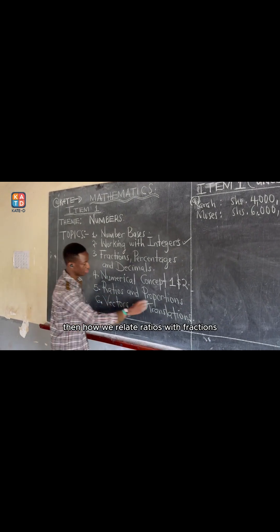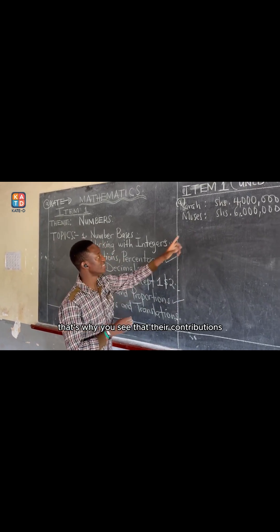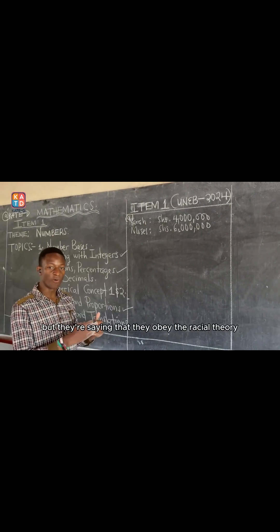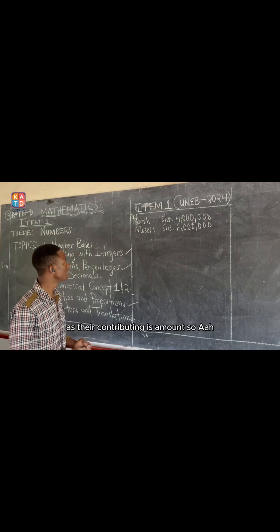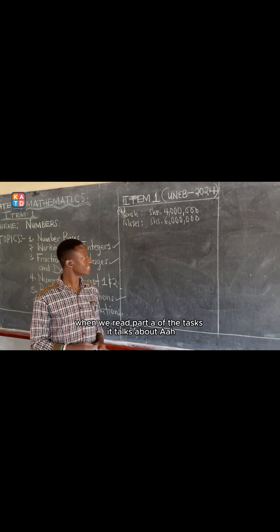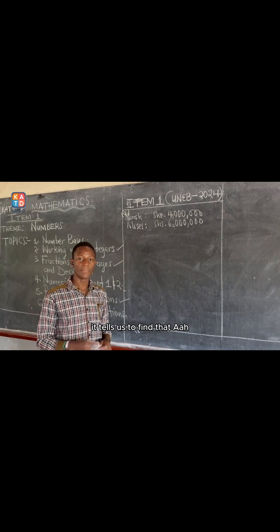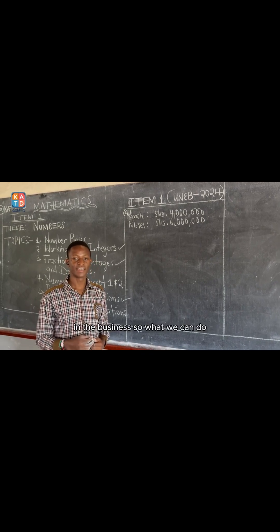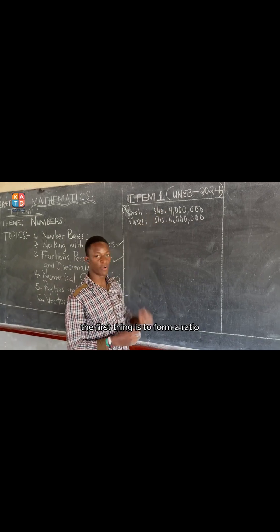How do we relate ratios with fractions? Their contributions are given as amounts, but they are saying that they obey the ratio theorem as they are contributing this amount. When we read Part A of the tasks, Part A tells us to find the profit that Moses needs to reinvest in the business. The first thing is to form a ratio.